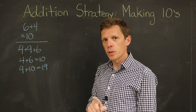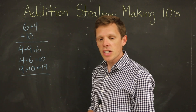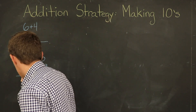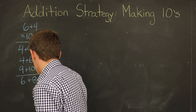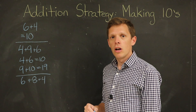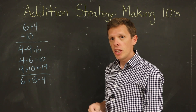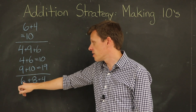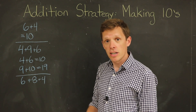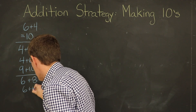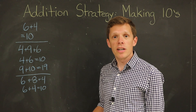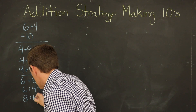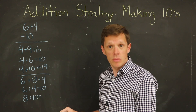Let's look at one more example in this group. This time let's add six plus eight plus four. Once again we're looking for two numbers that we can add together to make ten. In this example, we have a six and a four that we can add to get a sum of ten. Then all that's left is to add the eight to the ten, and we get a sum of eighteen.